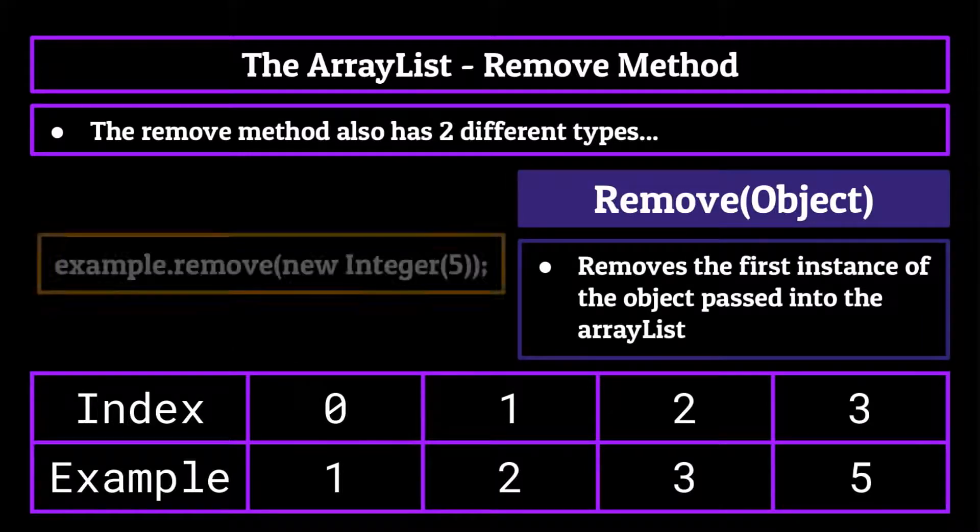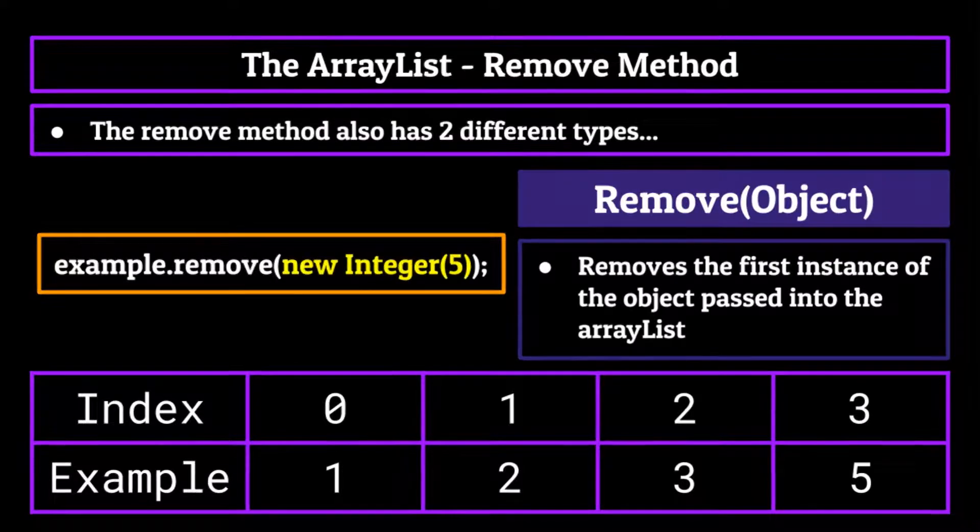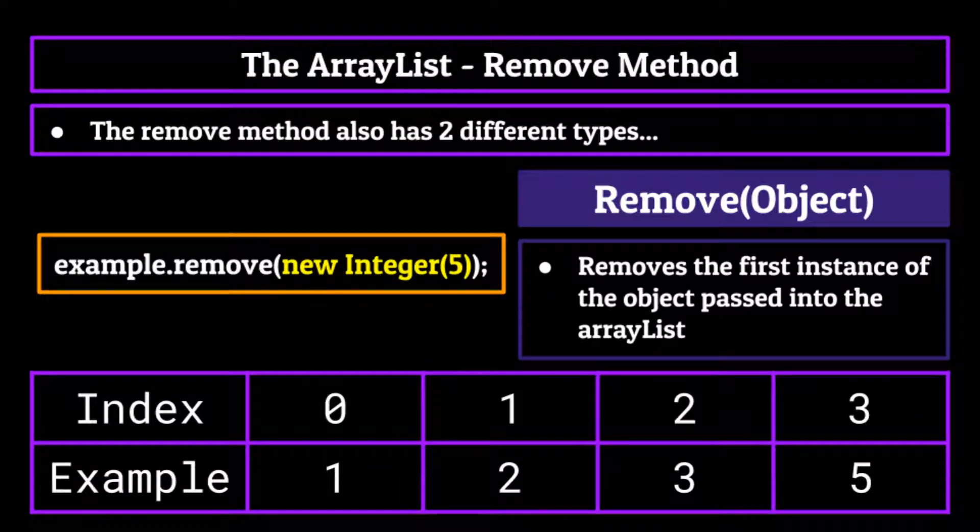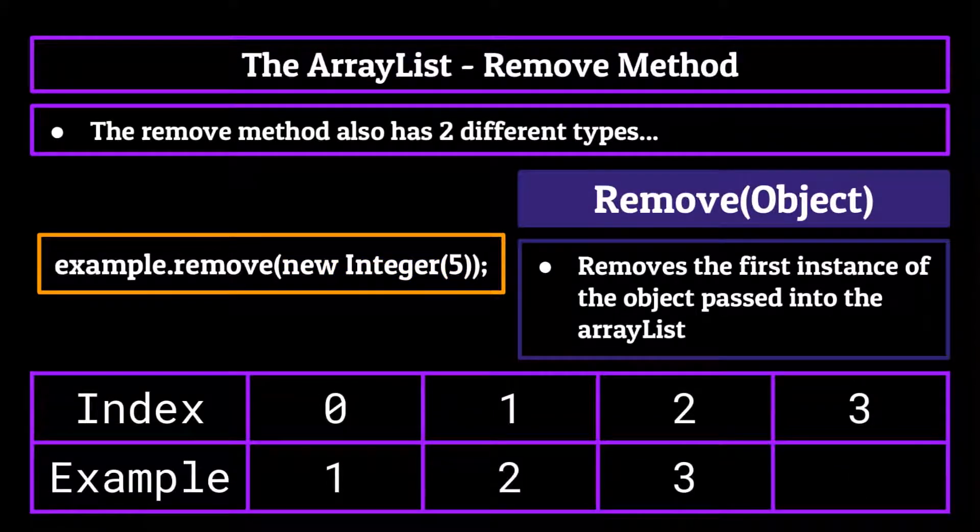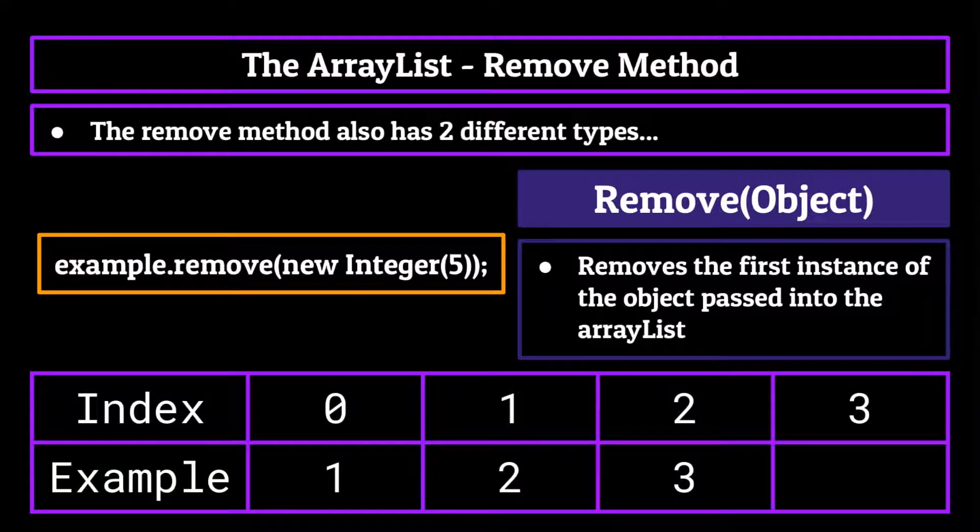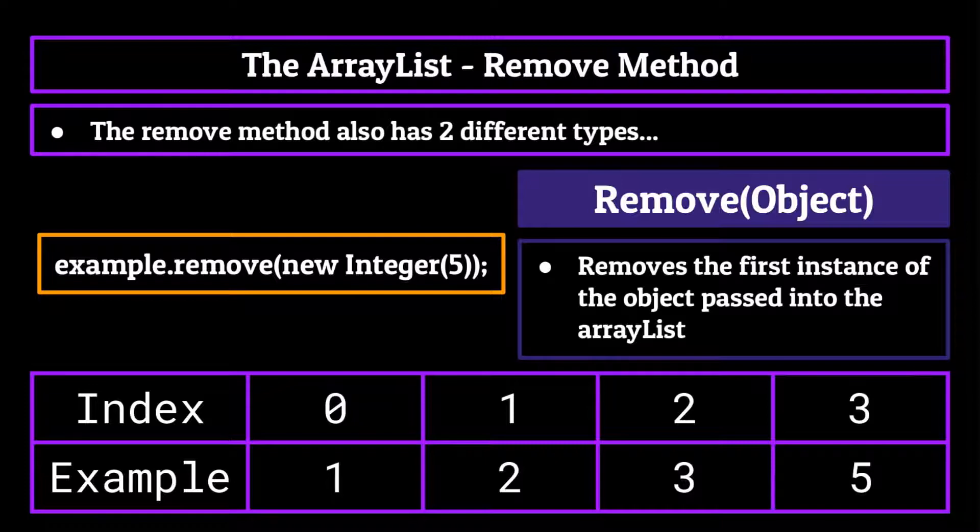The other option would be to run another remove method, only this time passing an integer object of five. It has to be an integer object in this case, because if we were just to use five, the computer would try to remove the fifth index of the ArrayList, which doesn't exist. By creating an integer object, we can ensure that when the code runs, the number five will be removed from the ArrayList simple as that. Now if there is no integer five in the ArrayList, the remove method will simply not work and return negative one to let the user know. Now I quite like the number five, so I'm actually not going to remove it from the ArrayList just yet.